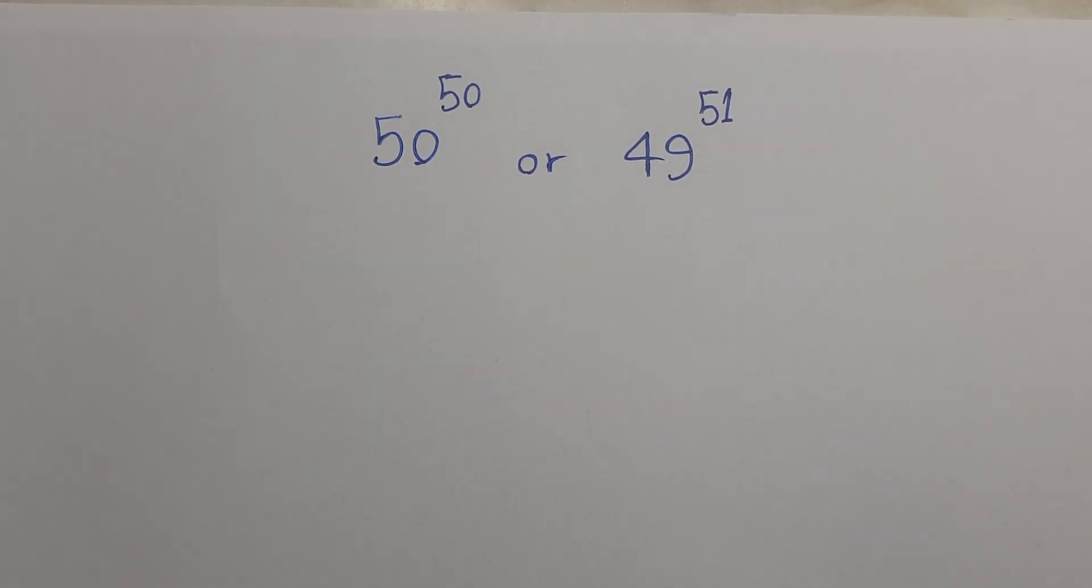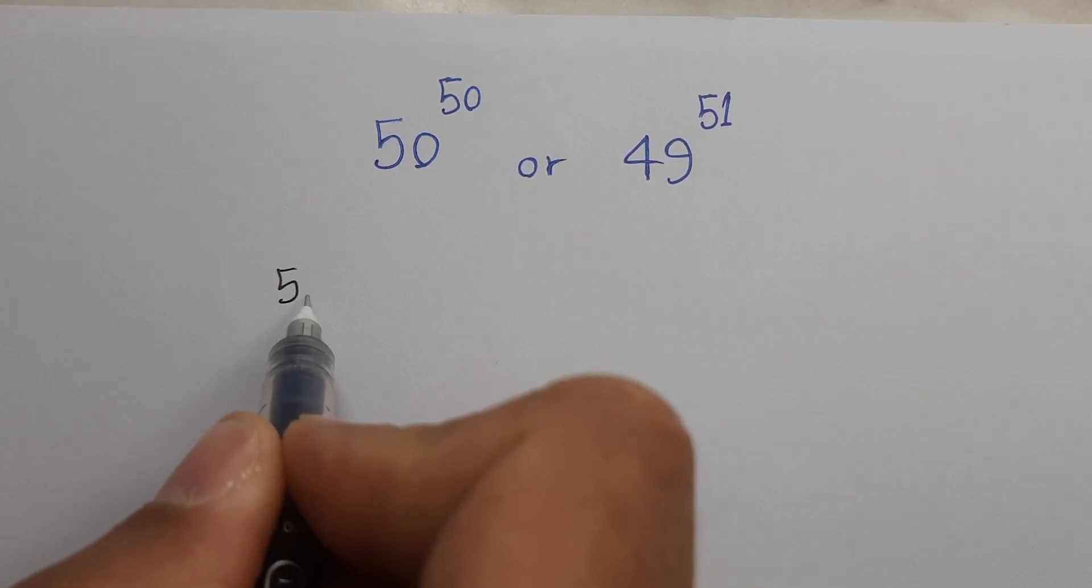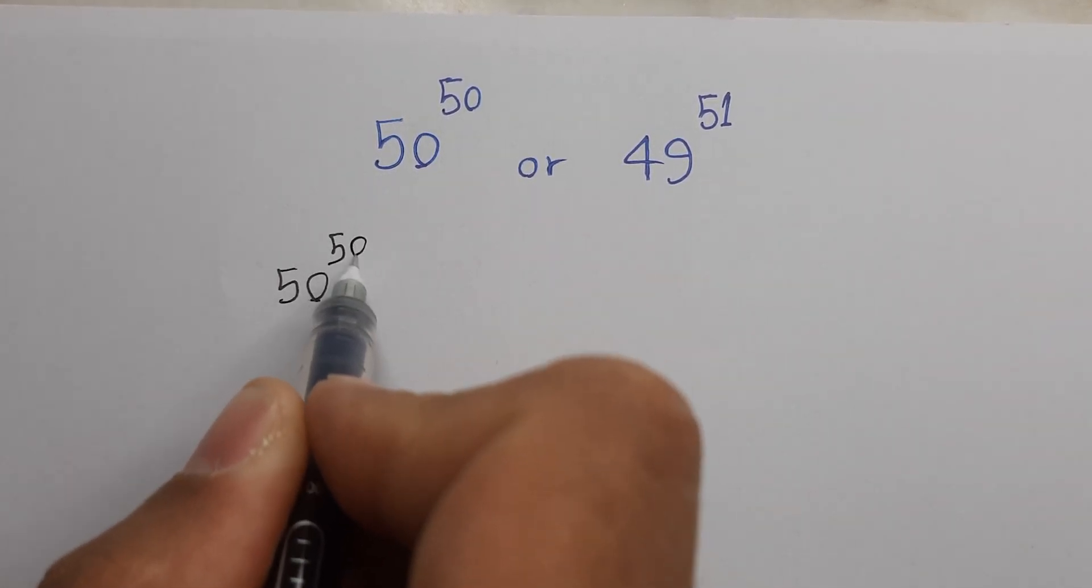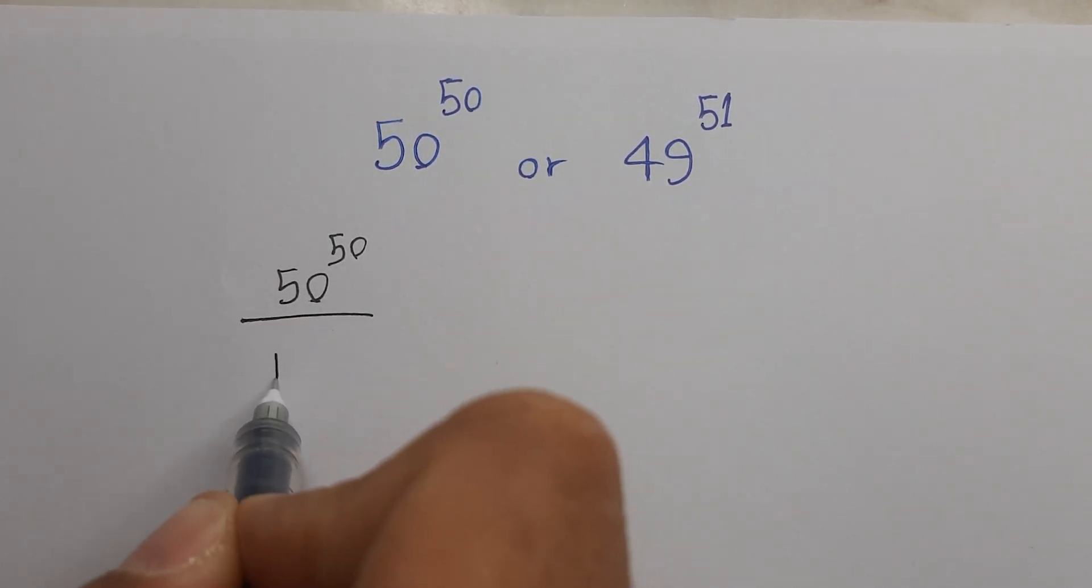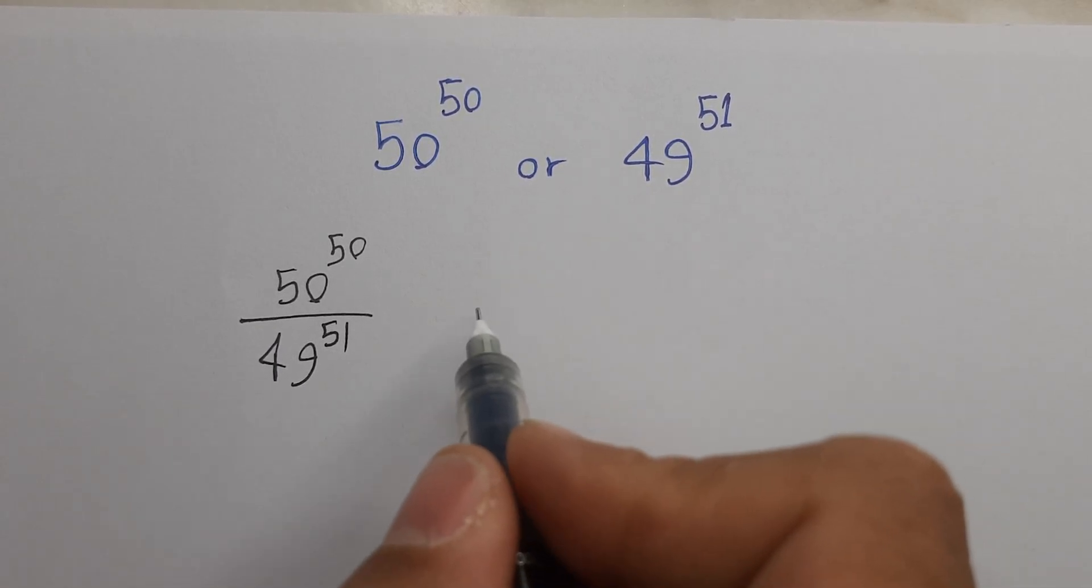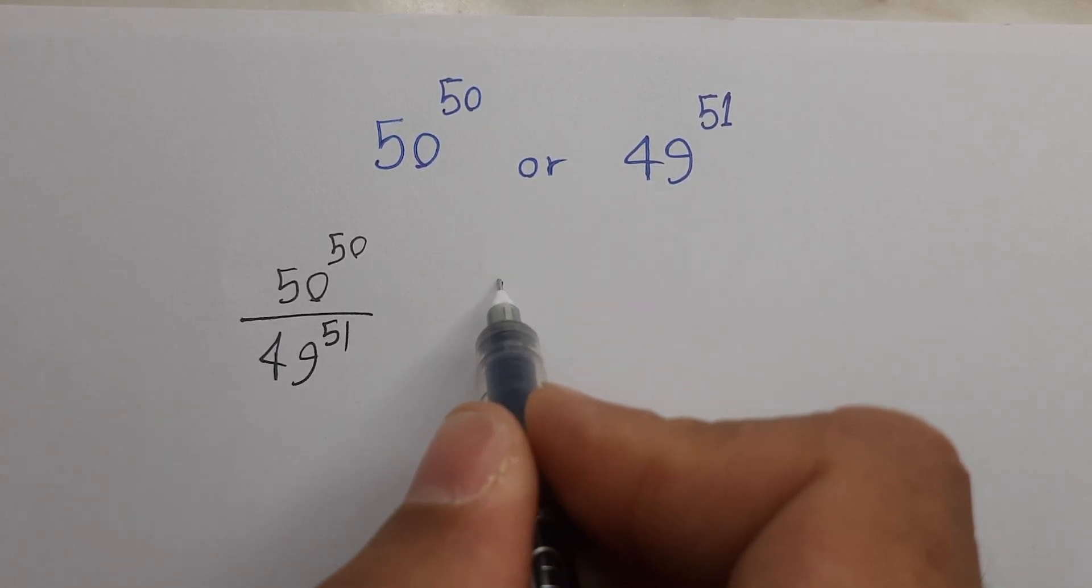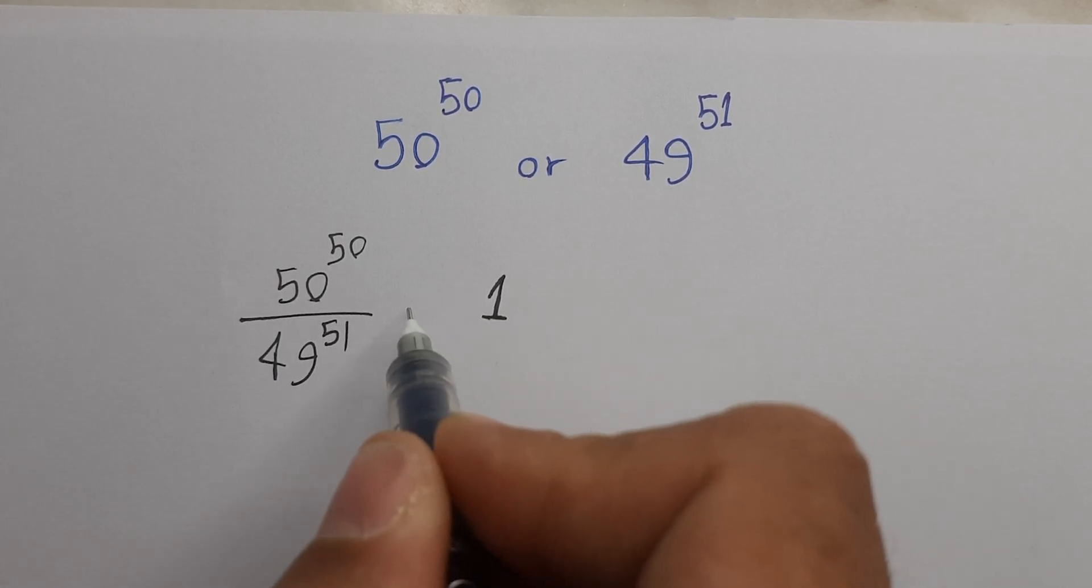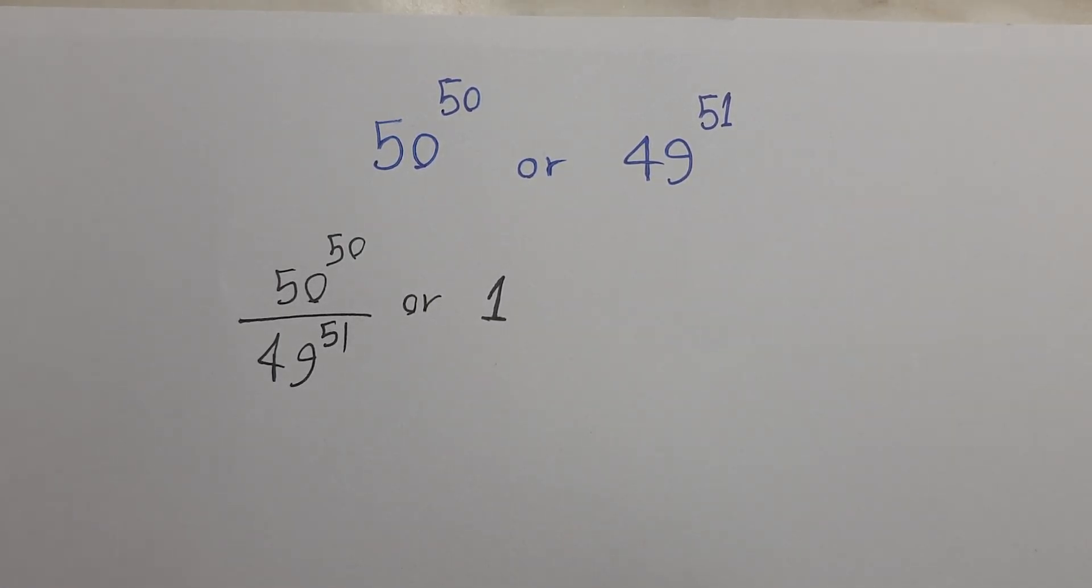Hey guys, we have an Olympic question where we should find which is larger: 50 power 50 or 49 power 51. So we can write instead that 50 power 50 over 49 power 51 and one on the right side.